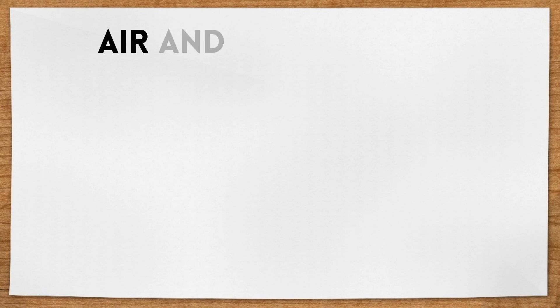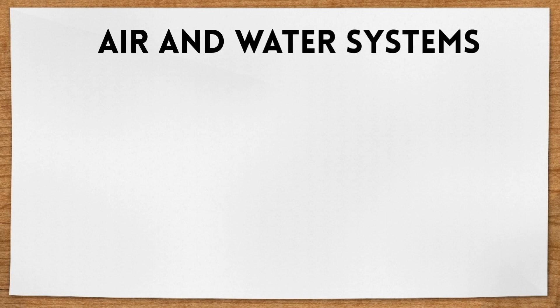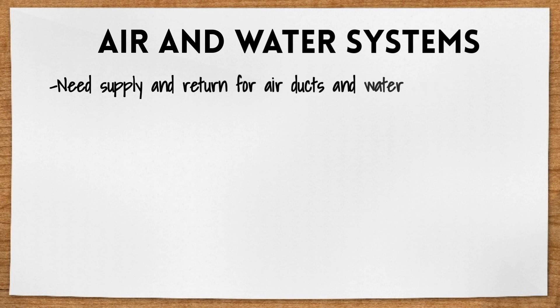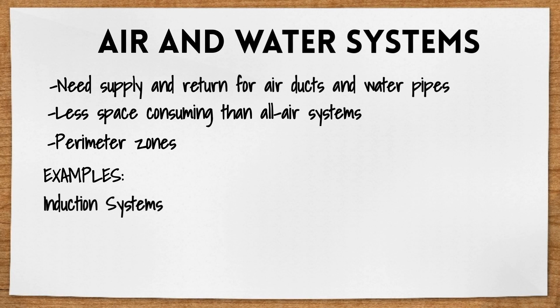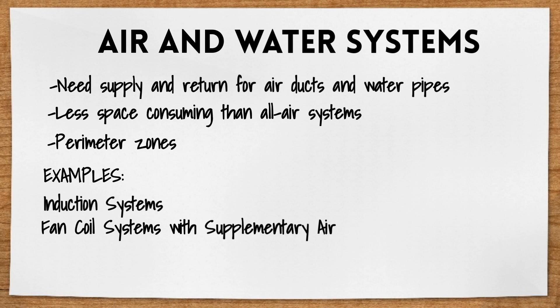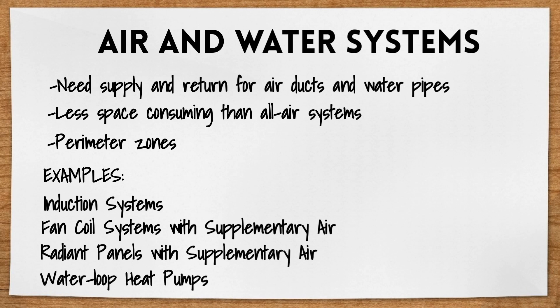The next category is air and water systems. These are the runner-up for consuming space in a building. These systems need supply and return distribution trees for both air ducts and water pipes. Since it's not all big air ducts, they are less space consuming than all air systems, though they do come in second. These systems are usually found in perimeter zones of office buildings, hospitals, schools, and apartments. Some examples include induction systems, fan coil systems with supplementary air, radiant panels with supplementary air, and water loop heat pumps.